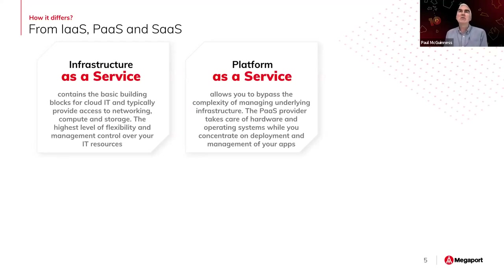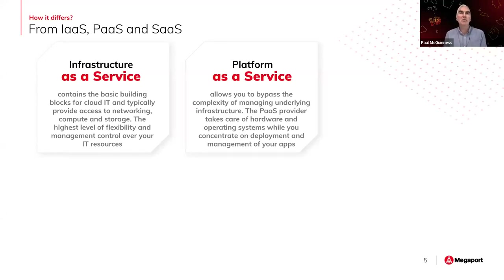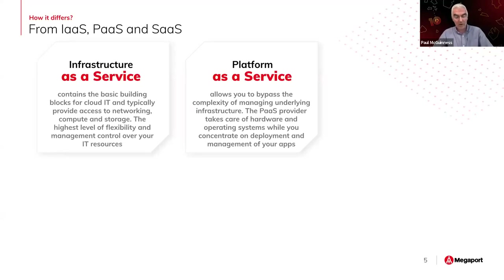With Platform as a Service, you focus more on the management of your applications and your data. The Platform as a Service provider takes care of the hardware and operating systems while you look after your apps, without worrying about the complexity of the underlying infrastructure. Some examples might be AWS Elastic Beanstalk, Heroku, or IBM Cloud Foundry.